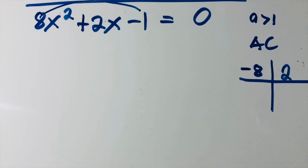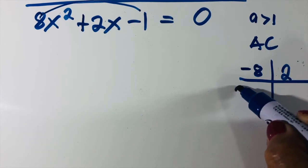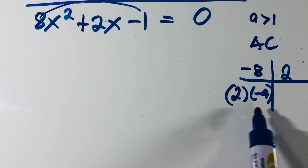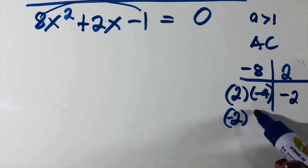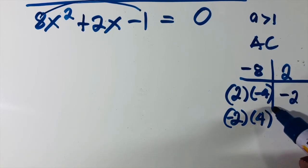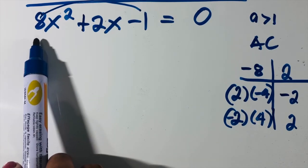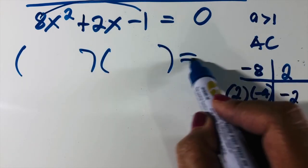Using the AC method: multiply 8 times negative 1, which equals negative 8. The middle term is 2, so we need products of negative 8 that give a sum of 2. Trying 2 times negative 4: sum is negative 2 — not correct. Switching signs: negative 2 times 4 equals negative 8, and negative 2 plus 4 equals positive 2. Correct — the pair is negative 2 and 4.